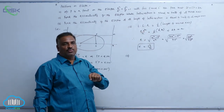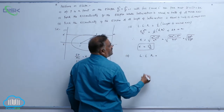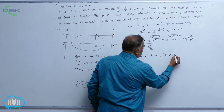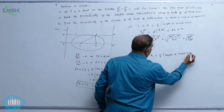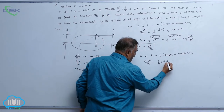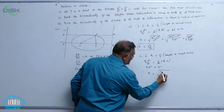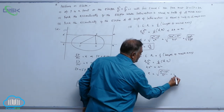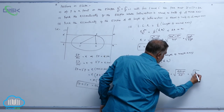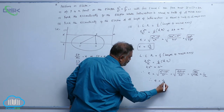Now find the eccentricity of the ellipse if the length of latus rectum equals half of its major axis. So 2b²/a equals half of 2a, which simplifies to 2b² equals a². Therefore b² equals a²/2, and e² equals (a² minus b²)/a² equals 1/2, giving e equals 1/√2.